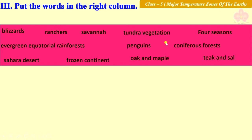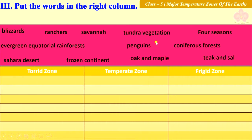Next question: You need to look at the words given in the box. You need to arrange all the words in a table which contains three sections — torrid zone, temperate zone, and frigid zone. Put the words in the right column.